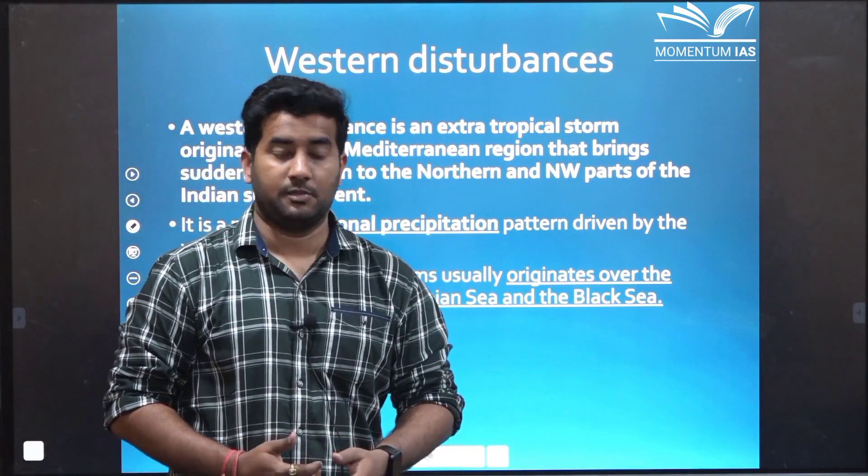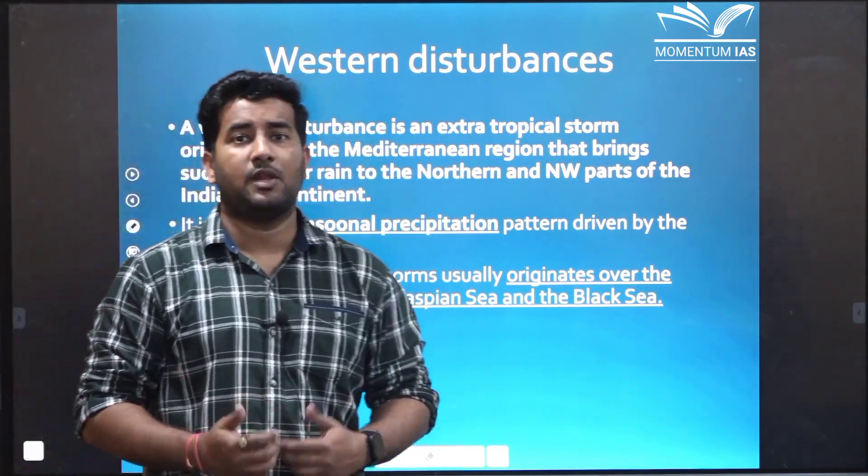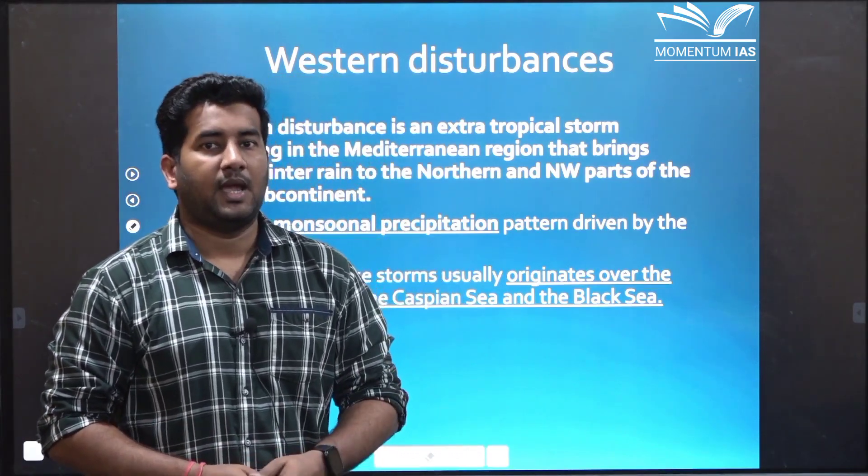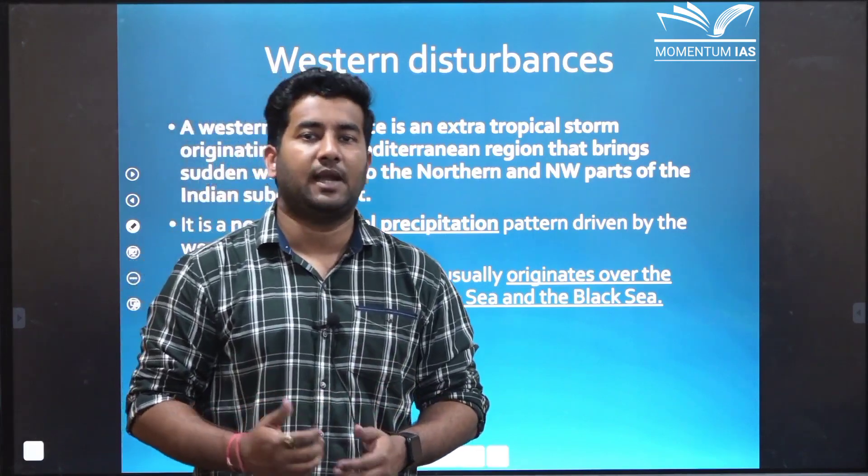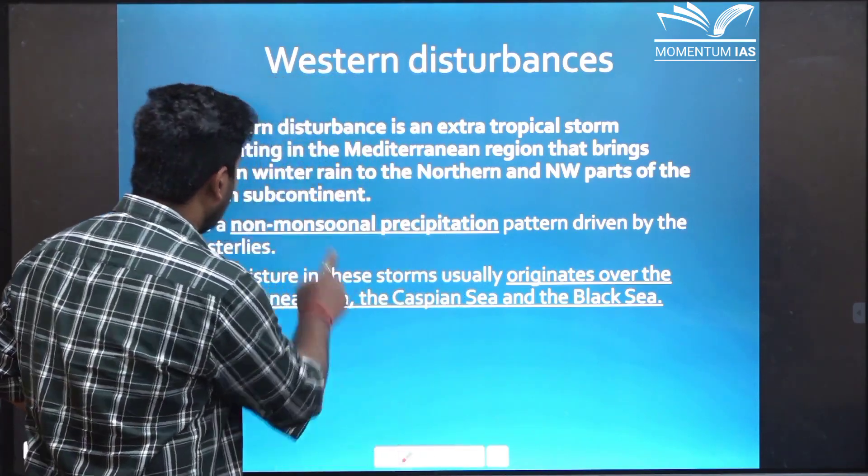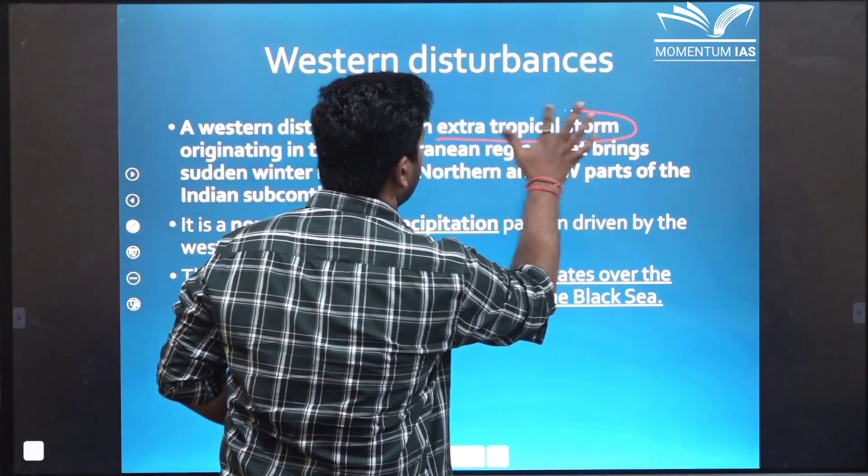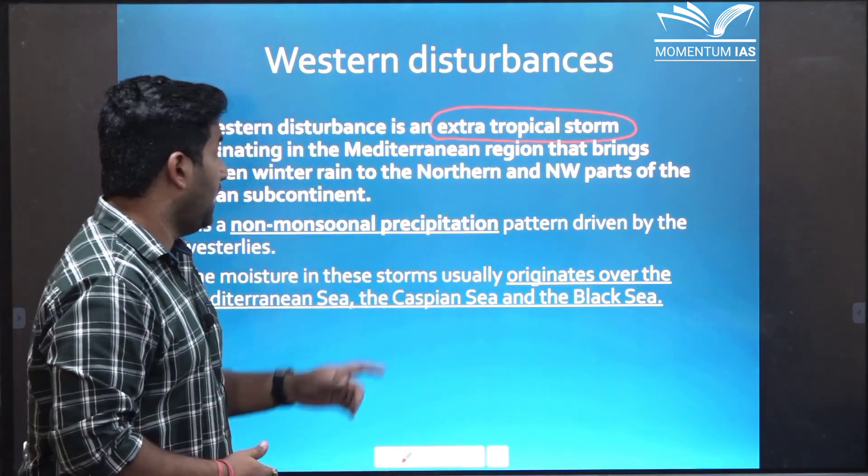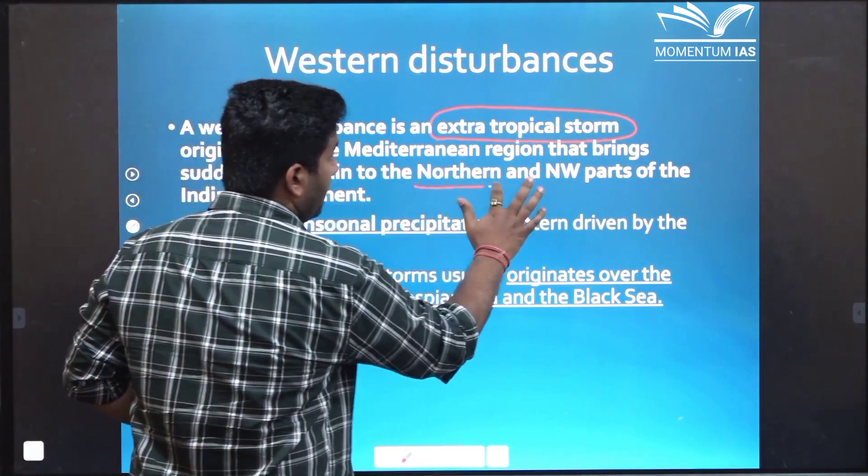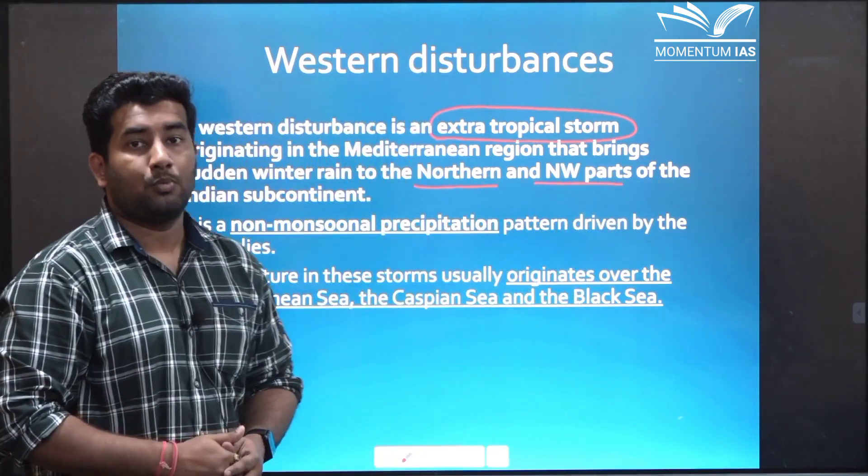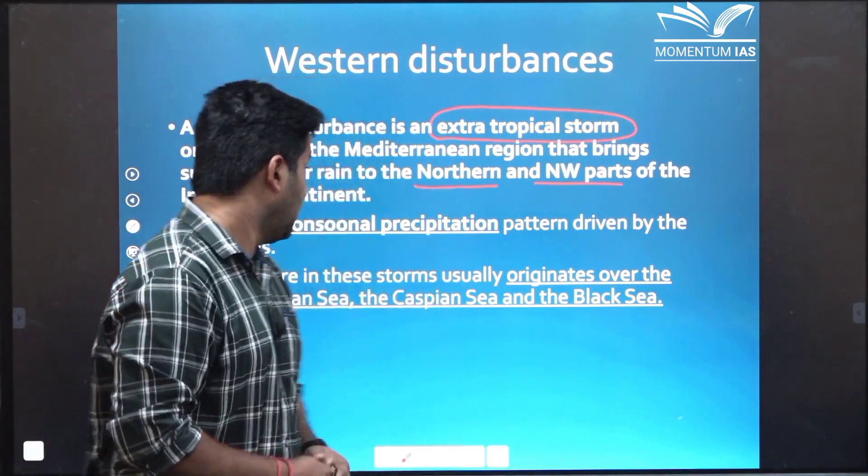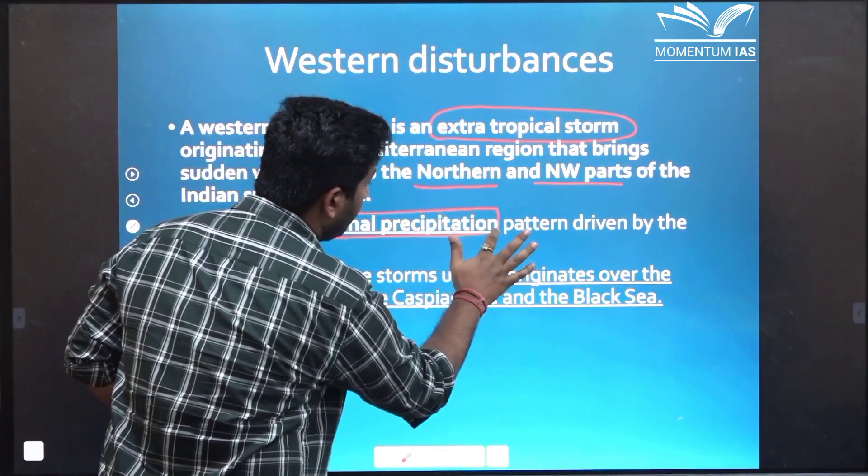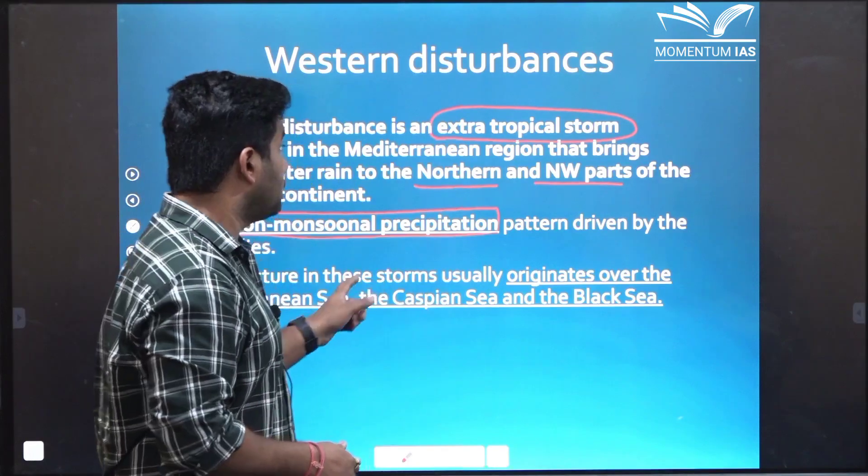Let's start with what are western disturbances. Before this I want to highlight one point. There are two types of storms. One are tropical storms that generally originate in the tropical areas and other are extra tropical storms that originate in the mid latitude area. Western disturbances are extra tropical storms. This is a keyword here kindly remember this, extra tropical storm, non-monsoonal precipitation. These key terms are very crucial for prelims examination.